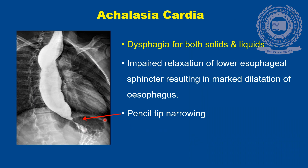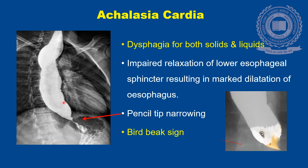Now we will discuss some common esophageal pathologies diagnosable on barium swallow. In achalasia, the patient clinically has dysphagia for both solids and liquids, as compared to carcinoma in which there is progressive dysphagia. In achalasia there is impaired relaxation of the lower esophageal sphincter, resulting in marked dilatation of the esophagus with the classical bird-beak sign at the gastroesophageal junction and pencil-tip narrowing. As seen in this image, the bird-beak sign refers to the tapering of the inferior esophagus with the dilated esophagus seen proximal to the segment.